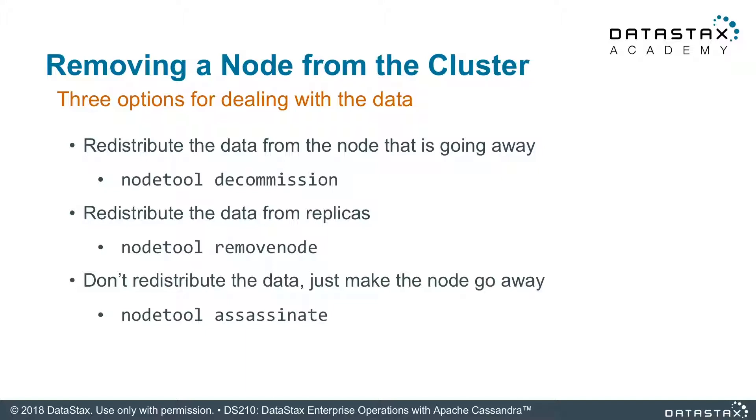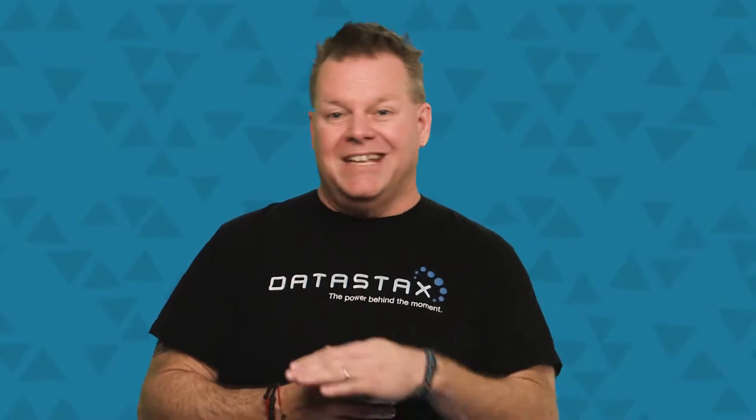Finally, there's the worst command I've ever heard of, but it's real: node tool assassinate. This means you have a node that just won't go away — it's like doing a kill -9 on your cluster for that running node. You want it gone, you want it out, you just don't want it in your cluster topology information anymore. Nothing like a remove node will get rid of it. Node tool assassinate just removes it from the system tables — it doesn't exist anymore. It's dead to the cluster. This is the last chance resort. Please use this sparingly.